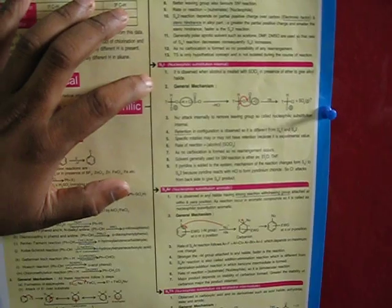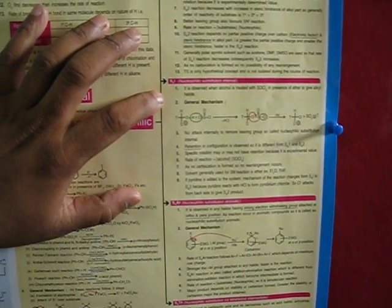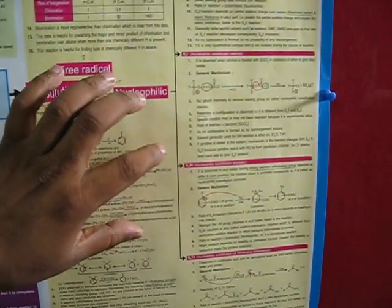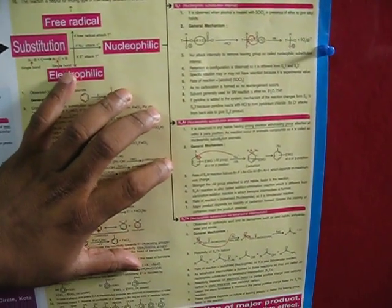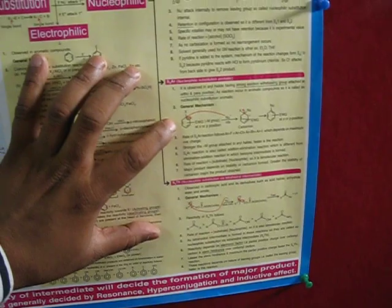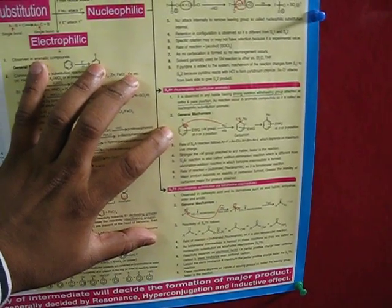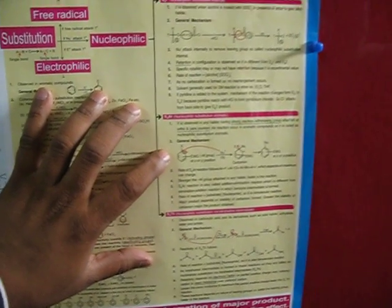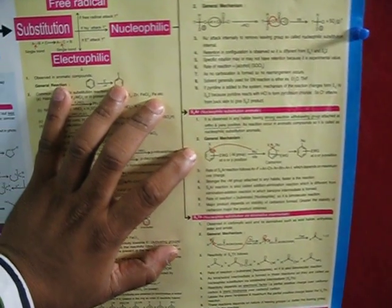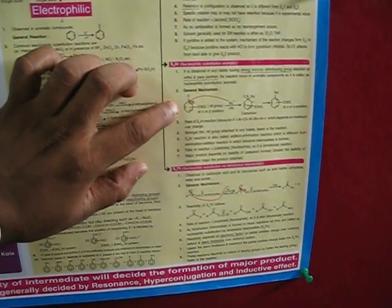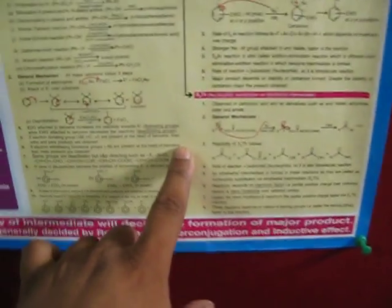While in case of SNi reactions, alcohols are treated with SOCl2, that is thionyl chloride. It will give alkyl chloride as a product and sulfur dioxide gas is removed. In this particular SNAr, when aromatic compounds, that is aromatic halides or aryl halides, with strong electron withdrawing group at ortho or para position, when treated with nucleophile, it will give substitution product. Such substitution is called as nucleophilic substitution aromatic, which proceeds via the formation of carbanion intermediates.